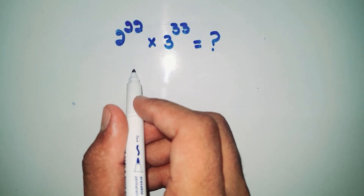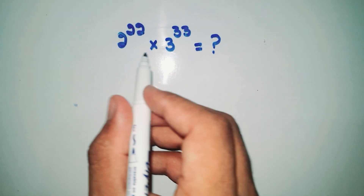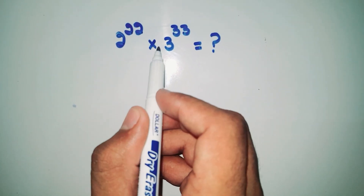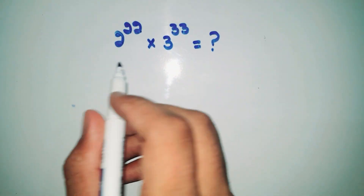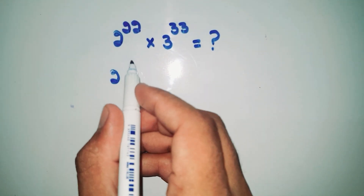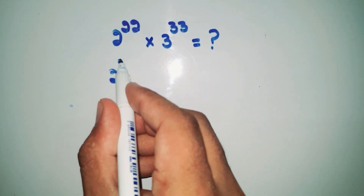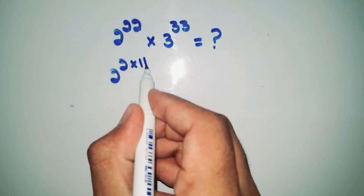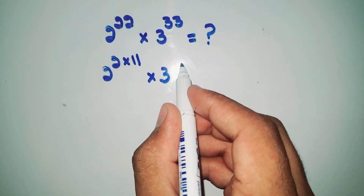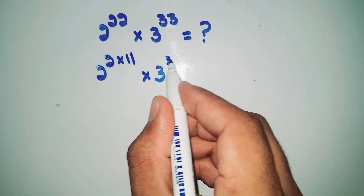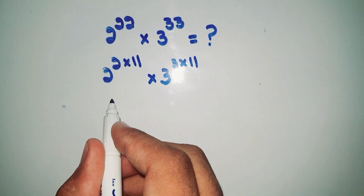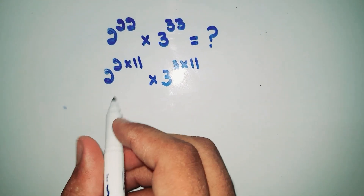Welcome back to another video. In this video we are going to solve the problem 2 power 22 multiplied by 3 power 33. First of all, we write 22 as 2 multiply by 11, and power 33 as 3 multiply by 11.